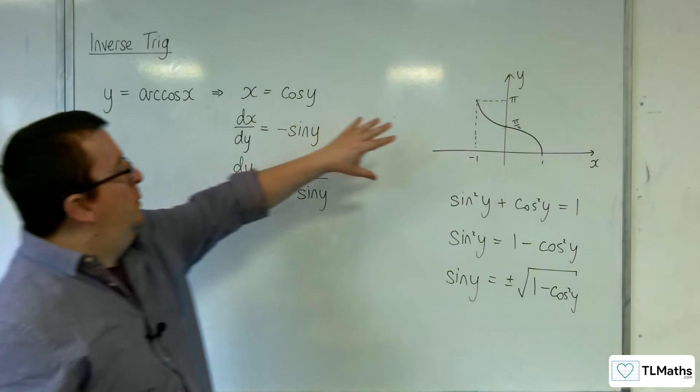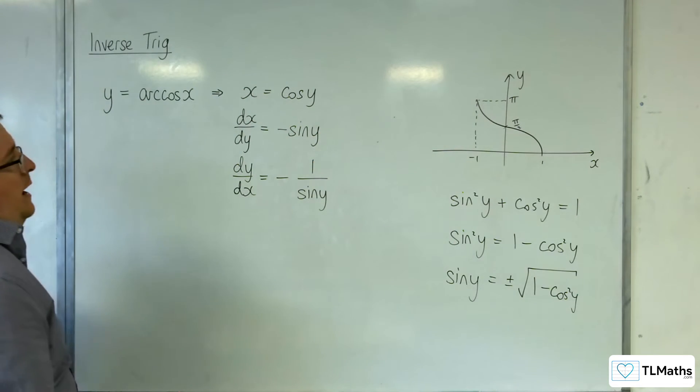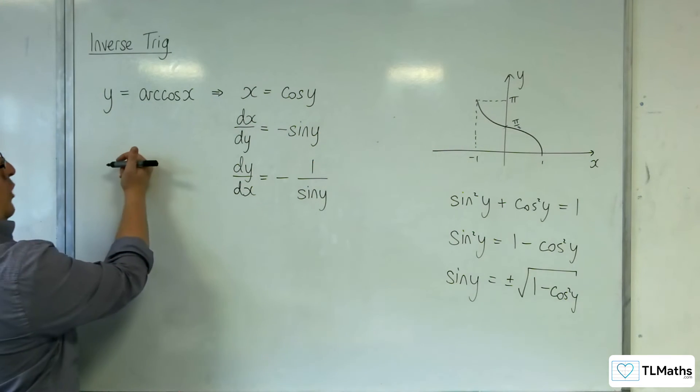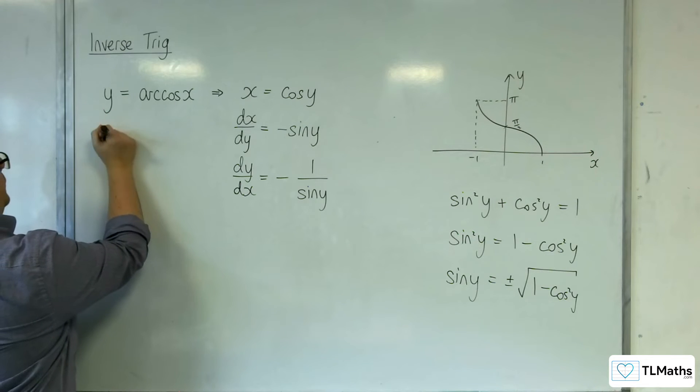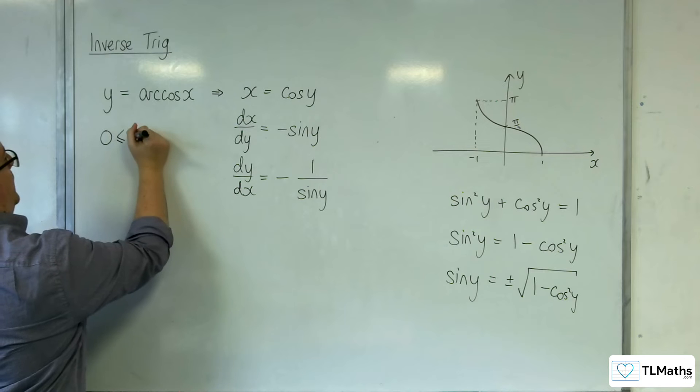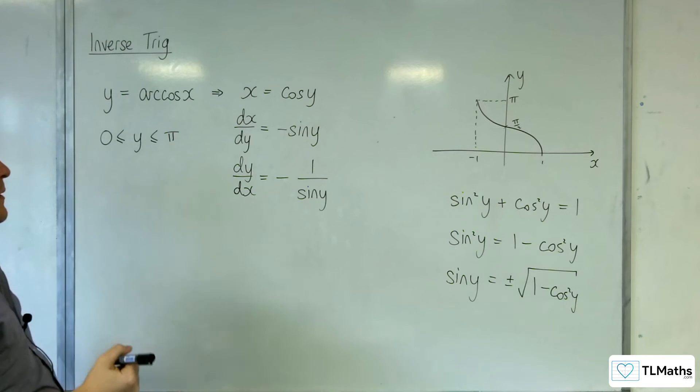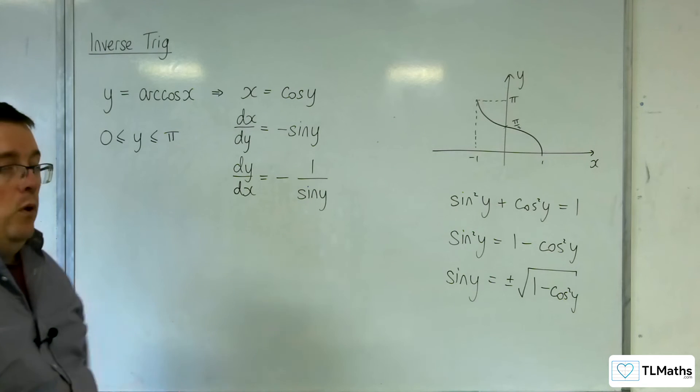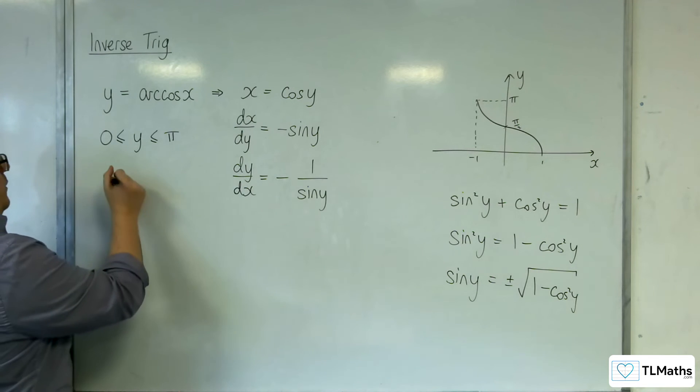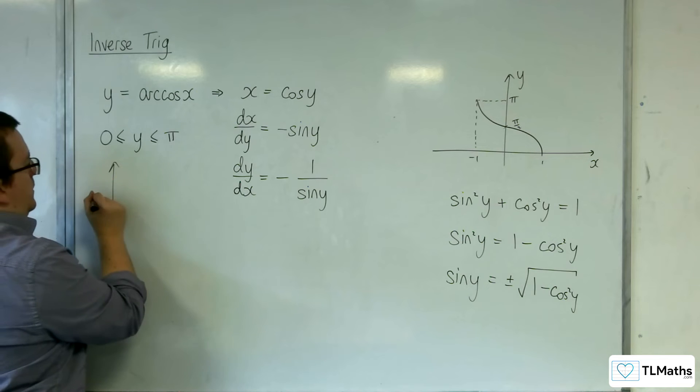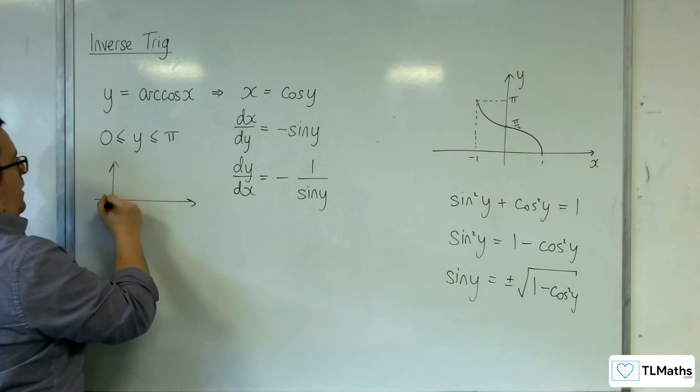Arc cosine x, as we can see, the y values go between 0 and pi. So 0 is less than or equal to y is less than or equal to pi. And then we're going to be evaluating this sine of y.